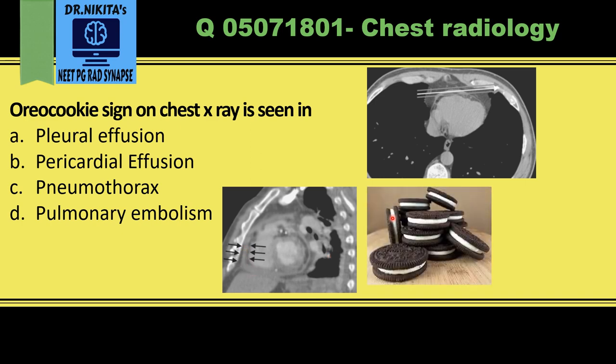To summarize on CT: the outer black line is pericardial fat, the white line is pericardial effusion, and the inner black line is epicardial fat. That is the Oreo cookie sign in pericardial effusion.